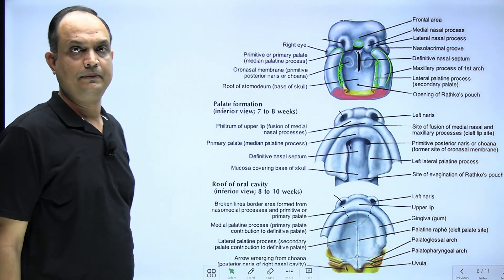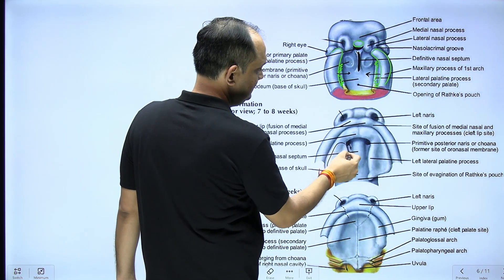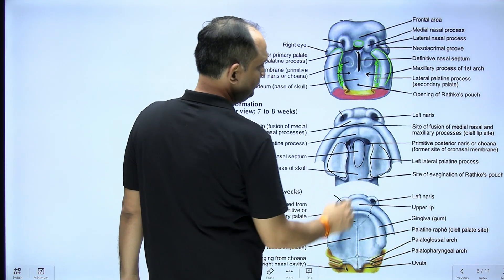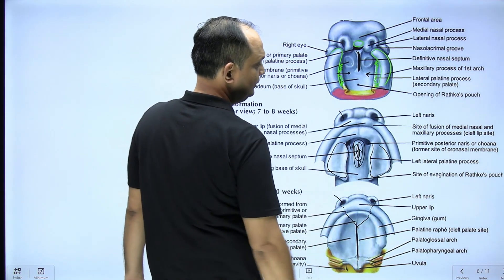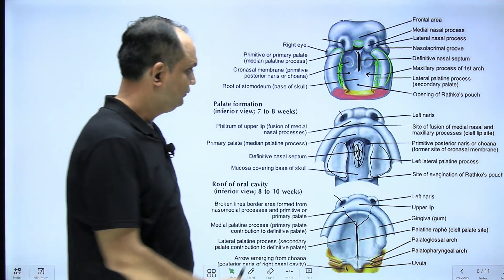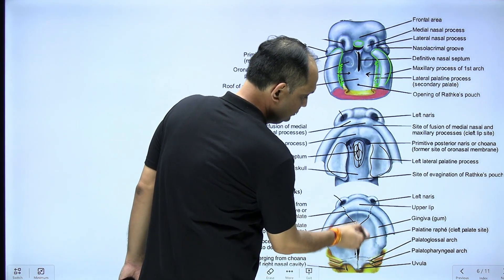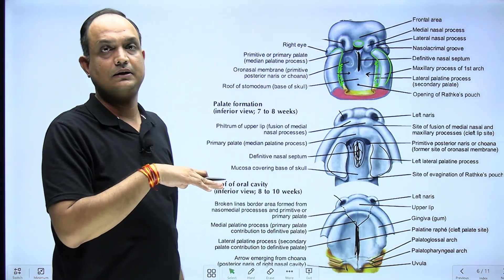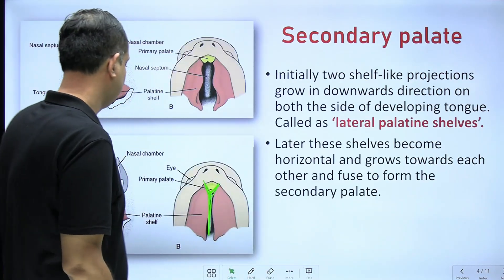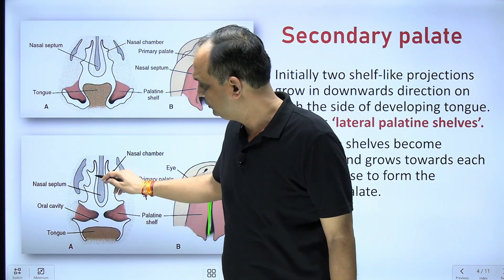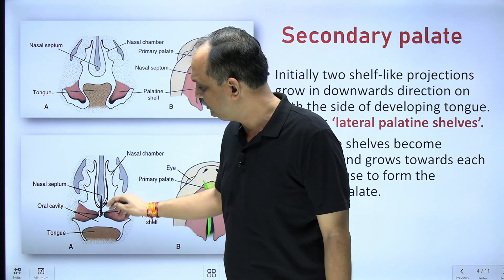Simultaneously, a projection comes downward from above to form the nasal septum. As the two horizontal plates grow toward each other and the nasal septum becomes more prominent, finally the Y-shaped fusion takes place. The two horizontal palatine shelves fuse, and their midline portion accommodates the nasal septum on their superior aspect. When writing about the formation of the definitive palate, do not forget that the nasal septum grows downward in the midline and is accommodated at the fusion point.